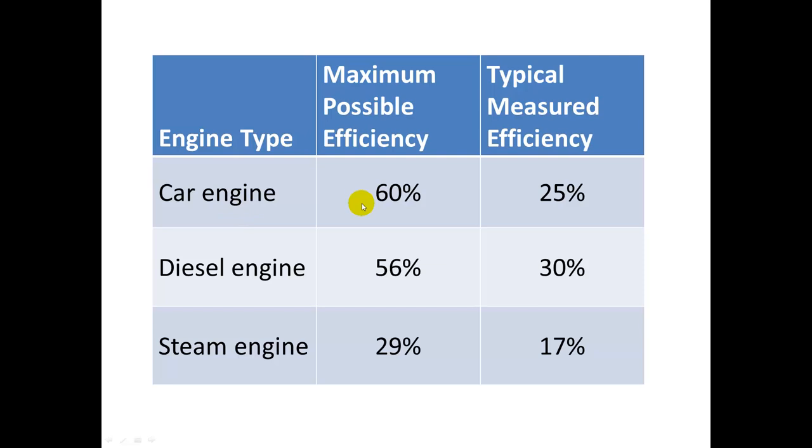For a car engine, the maximum possible efficiency is 60%, but if you actually measure the efficiency, it's more like 25% as we factor in things like friction. Diesel engines can be more efficient, up to 30%, and they're known to get better gas mileage.